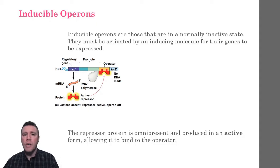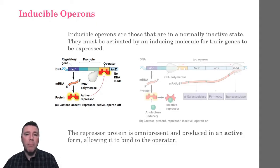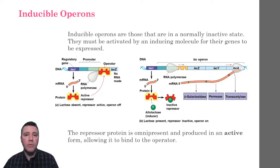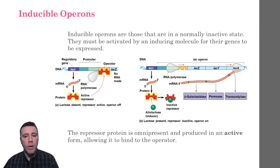But when the inducing molecule, allolactose, is present, it binds to the repressor protein, changing its conformation into an inactive state. Allolactose is a naturally occurring isomer that coexists in small amounts with lactose. The repressor protein, its conformation now changed, is no longer able to bind to the operator. Consequently, RNA polymerase is now free to transcribe the genes of the operon.